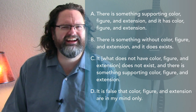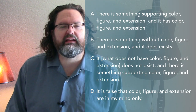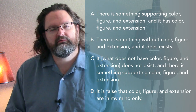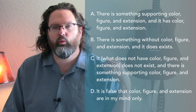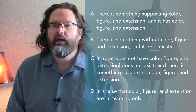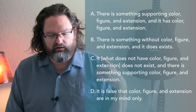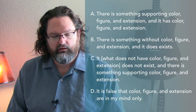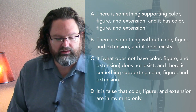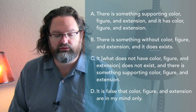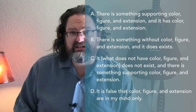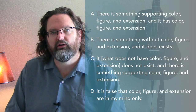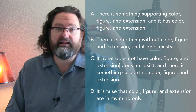That would be bizarre. Maybe I want to say that the material substance causes the color, figure, and extension, and it has those same ones. Maybe we could do that, but then we're kind of jumping down to D. D is color, figure, and extension in my mind only. So if we deny that, then we say it's false that color, figure, and extension are in my mind only. We're saying not only is it in my mind, it's in the thing.